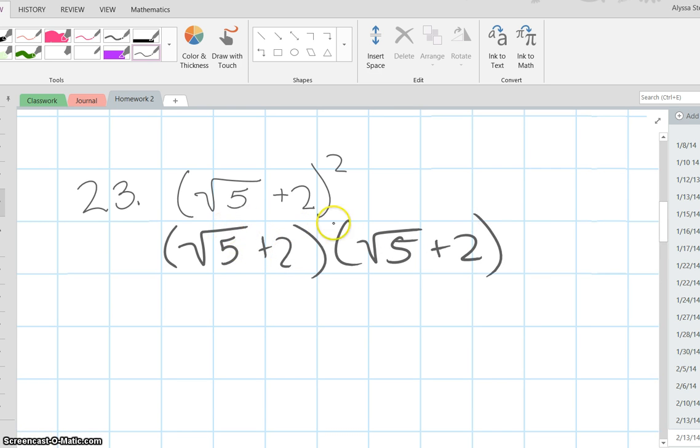Then you multiply each term. The square root of 5 times the square root of 5 is the square root of 25. Then the square root of 5 times 2 would be 2 times the square root of 5. Plus another 2 times the square root of 5, and then plus 4.